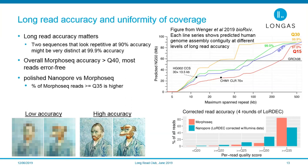To evaluate MorphoSeq accuracy, we compared against Nanopore reads. Since raw Nanopore accuracy is not great, we first polished the Nanopore reads with Illumina data, then compared. Even after polishing, there seems to be a limit to how much error can be eliminated. With MorphoSeq reads we're getting a higher fraction of reads above Q35 than the polished Nanopore reads.